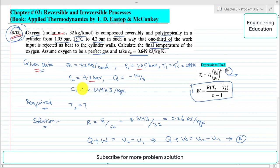And the value of Cv is 0.649 kilojoules per kilogram per Kelvin. We are required to find the final temperature after compression at state 2, so this is the required term which we will find in this problem.